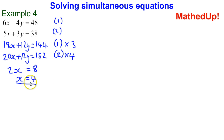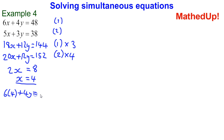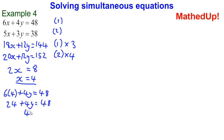I now know that x is equal to 4, so I can sub this back into one of these equations. I'm going to sub it back into equation 1: 6x plus 4y is equal to 48. x is 4, so 6 times 4 plus 4y is equal to 48. 6 times 4 is 24, so 24 plus 4y is equal to 48. If I subtract 24 from both sides, 4y is going to be equal to 24, which tells me that y is going to be equal to 6.